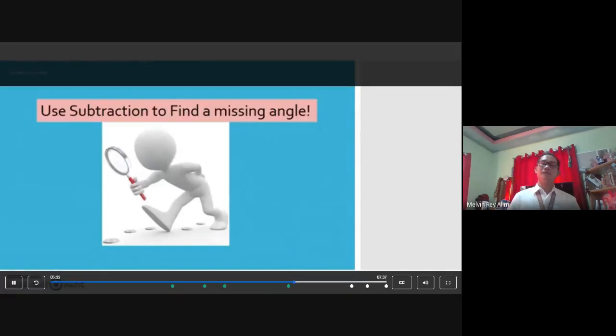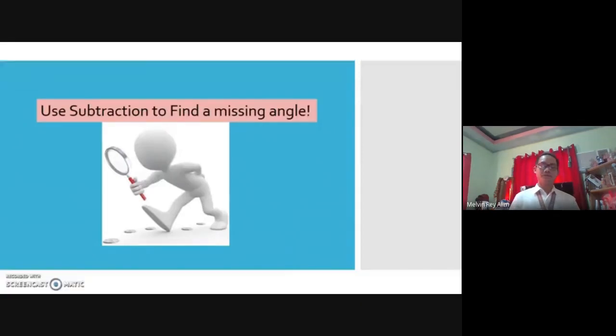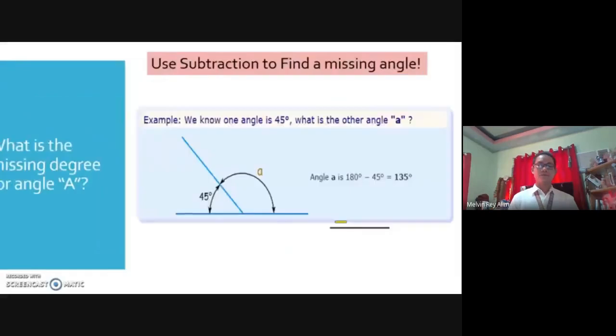All right, let's practice this. Again, I'm using subtraction to find a missing angle. What is the missing degree for angle A? Again, I'm going to use subtraction because we do know that 45 degrees is the amount right here, but what's the other angle, angle A? Well, angle A is 180 degrees minus what we're given, 45 degrees, and it gives me a total 135 degrees of the missing letter A angle.